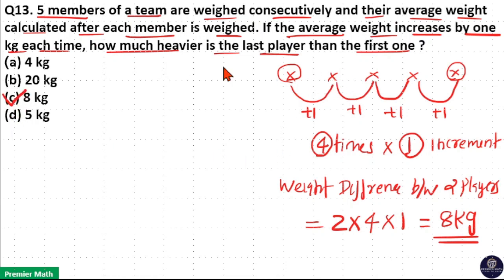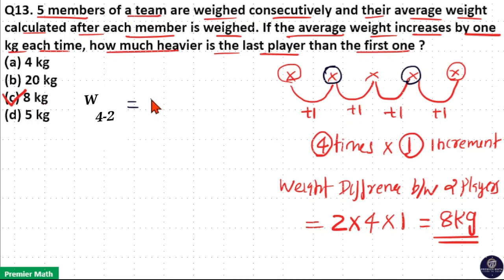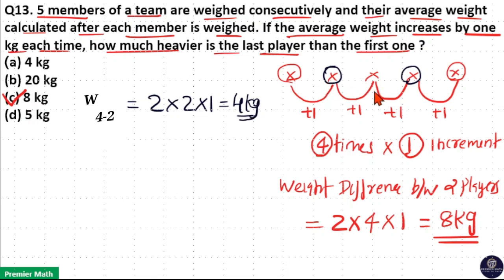If we need to find out the weight difference between the 2nd and 4th player, then the weight difference between the 4th and 2nd player is: between the 4th and 2nd player, there are 2 times average increases, and 2 players are involved. So, 2 into 2 into 1 kilogram (the unit increment) is equal to 4. So, the weight difference between the 4th and 2nd player will be 4 kilograms.